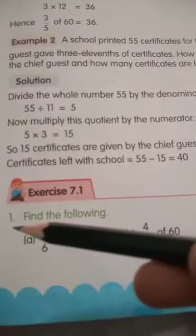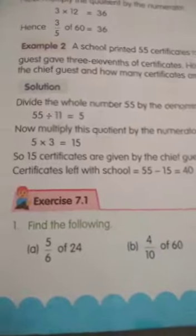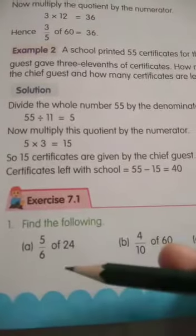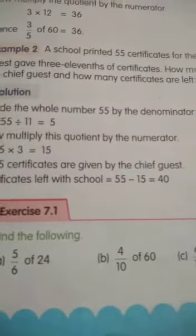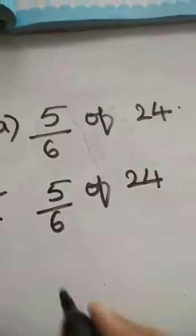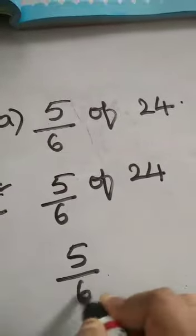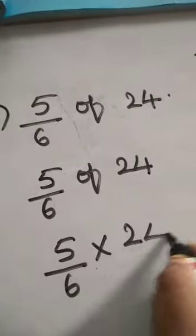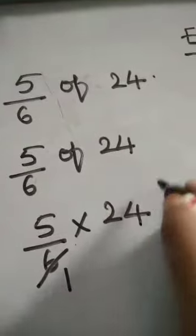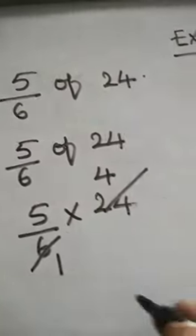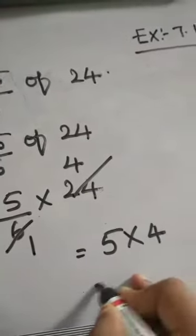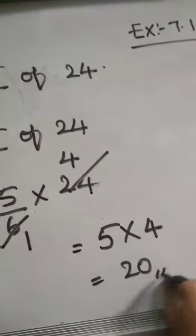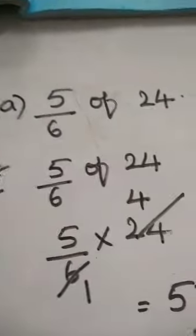So here is the first question: Find the following. 5 by 6 of 24. So 5 by 6 of 24, let us solve this. 5 by 6 into 24. So 6 1s are 6, 6 4s are 24. So 5 into 4 — 5 4s are 20. So this is the first problem, part A.